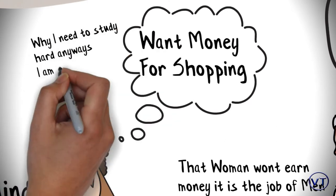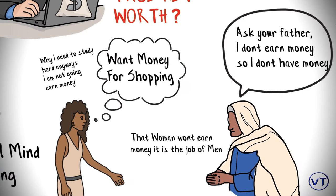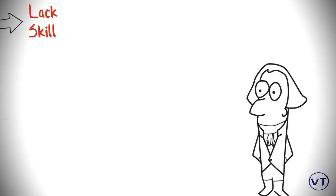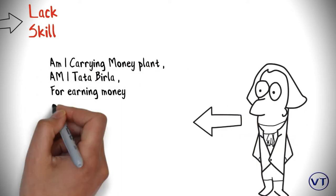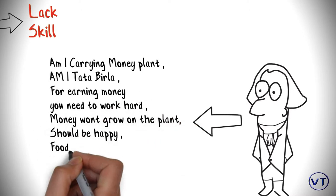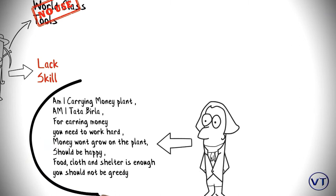She might think, why do I need to study hard? Anyways I am not going to earn money. You might have encountered statements in the past from elders in your family: Am I carrying money plant? Am I Tata Birla to buy this for you? For earning money, you need to work hard. Money won't grow on the plant. You should be happy with how much you have. Food, clothes and shelter are enough to live the life. You should not be greedy.